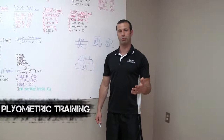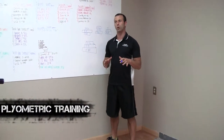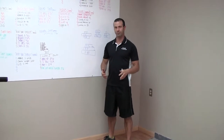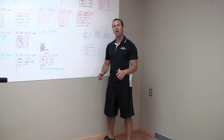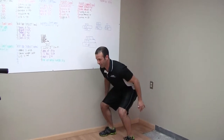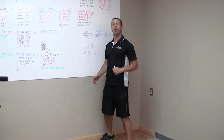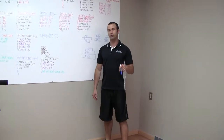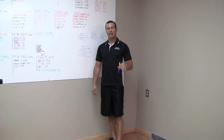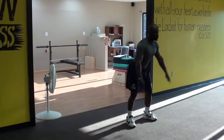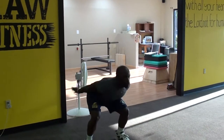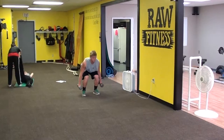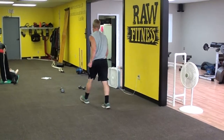Plyometric training is where we make your body more elastic — more able to use the elastic energy in it to make you more explosive. Here's a simple test: squat down, wait three seconds, then jump as high as you can. Then go down and jump up as fast as you can. The second jump was higher, because your muscles and tendons can be used like rubber bands to release energy. We use proper progressions to first prevent injury, then make you more explosive so you can run faster and jump higher than you ever thought possible.